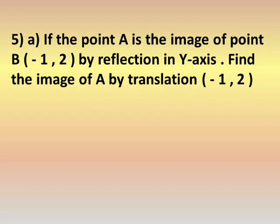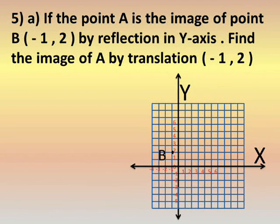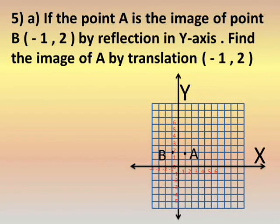Number five A: if point A is the image of point B(negative 1, 2) by reflection in the y-axis, find the image of A by translation (negative 1, 2). We plot the coordinates. Point B is at (negative 1, 2). A is the image of B by reflection in the y-axis.